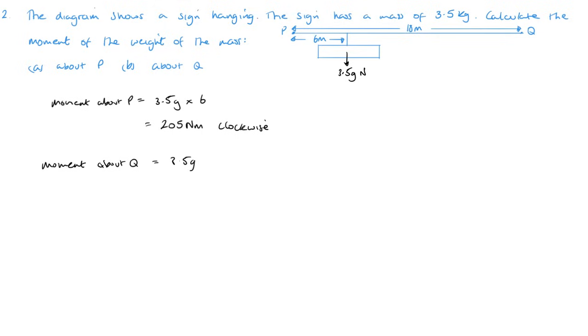Now moment about Q. So again it's 3.5 G is the force. And Q is this distance, so that is multiplied by 18 minus 6 or 12. So 3.5 G times 9.8 times 12, and that gives me 411.6 Newton meters, and that is anti-clockwise. Sorry this 205 was 205.8, I missed out the 0.8. You can round them both up to 206 Newton meters and 412 Newton meters if you did them to 3 significant figures there.